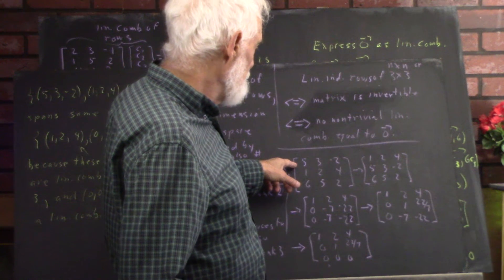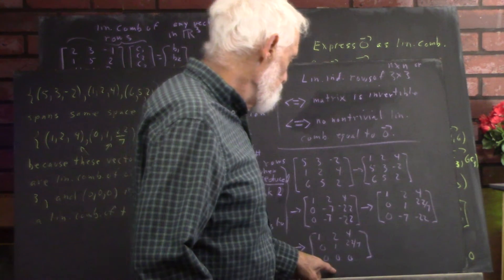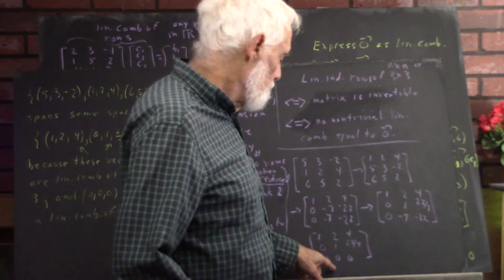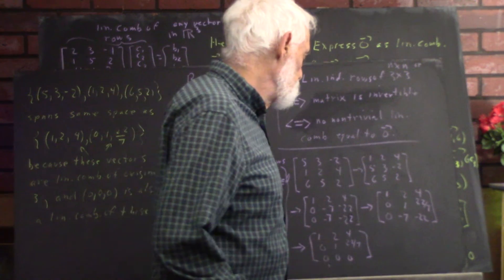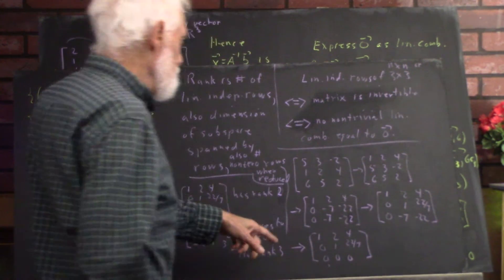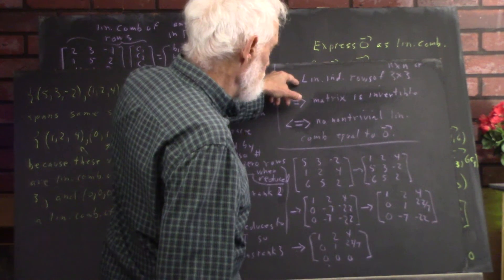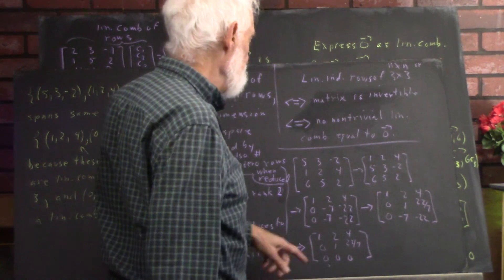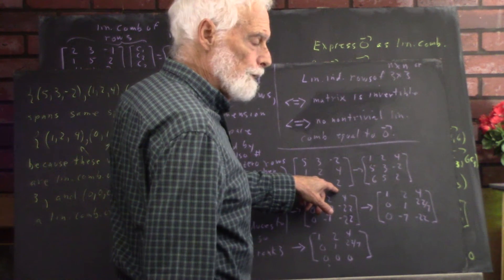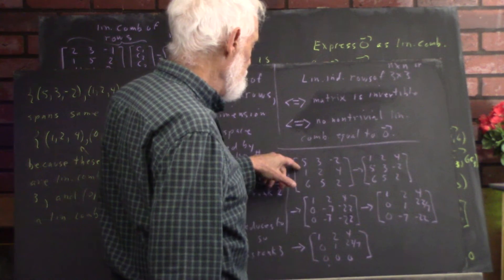For the matrix we have here, the matrix fairly quickly reduces down to one where you do have a row of zeros. So, this matrix is non-singular. This is non-invertible. And your rows are not linearly independent. Your third row could be regarded as linearly dependent on the first two.